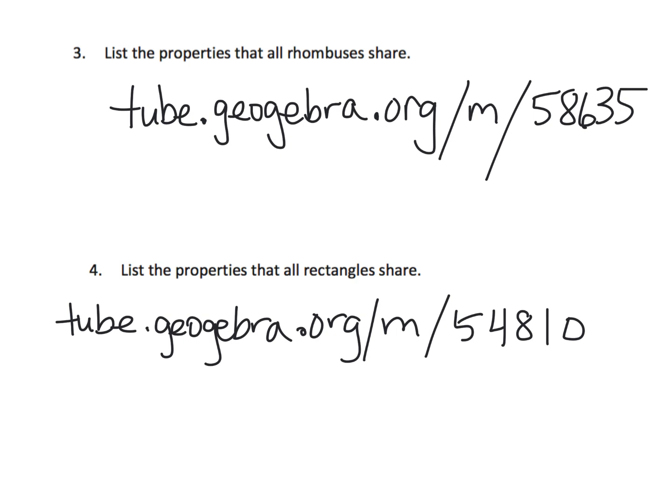And the last slide, I'm going to do something a little bit different. It says list all the properties that rhombuses share. I want you to go to this website: tube.geogebra.org slash m slash 58635. You got to do everything correctly, and I know it works because I just checked it. I just want you to play with this applet. It allows you to dynamically play with a rhombus and look at all of the characteristics and properties. Same thing down here with rectangles, it's a different URL: tube.geogebra.org slash m slash 54810. Just play.